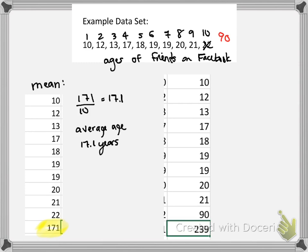So now you have a friend who is very far above you in age. Again, in order to calculate the mean of this new data set, we have to sum all of those numbers. I used an Excel spreadsheet and found the sum of 239. I kept the data size at 10 so that when I divide it, it's easy — so this is about 24 years.